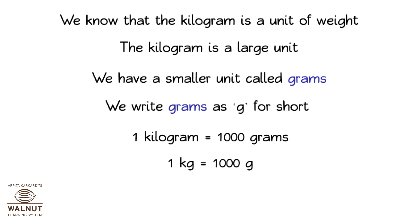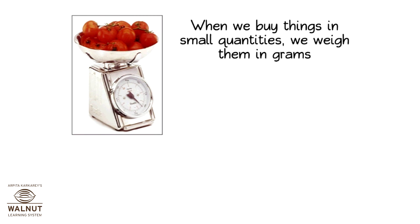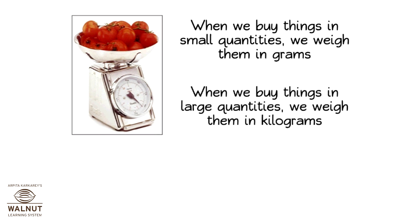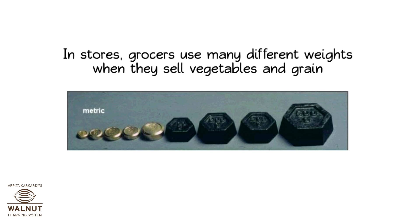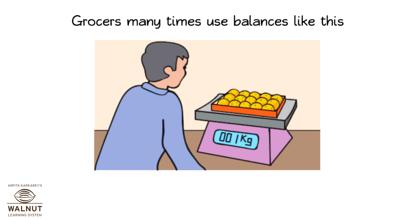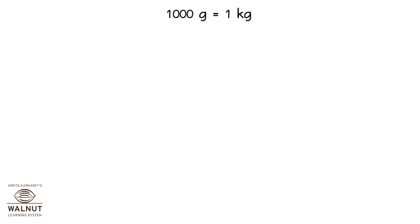One kg is equal to one thousand g. When we buy things in small quantities, we weigh them in grams. When we buy things in large quantities, we weigh them in kilograms. In stores, grocers use many different weights when they sell vegetables and grain. Grocers many times use balances like this. One thousand grams is equal to one kilogram, and one kilogram is equal to one thousand grams.